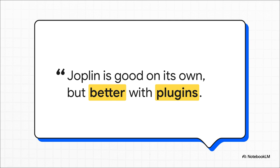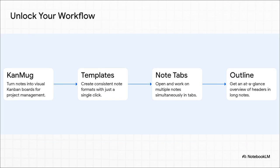This is where the real customization begins. With plugins, you can completely change how you work. For instance, you can install something called ConMug and turn a basic to-do list into a visual Kanban board. If you're always writing up the same kind of meeting notes, there are template plugins for that. You can even open multiple notes in tabs, just like a web browser. And for those huge, long-form notes, the outline plugin gives you a clickable table of contents. This is serious power user stuff, and it's all completely free.